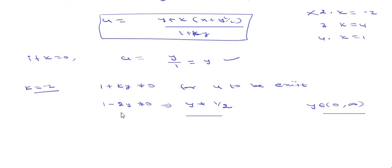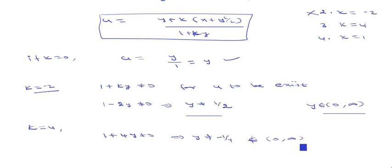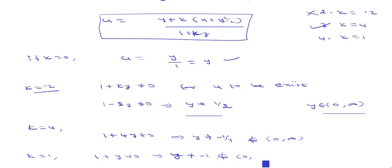For k = 4: we need 1 + 4y ≠ 0, which implies y ≠ −1/4. Since −1/4 does not belong to [0, ∞), the denominator is never zero in the domain, so the solution exists. For k = 1: we need 1 + y ≠ 0, implying y ≠ −1, which also does not belong to [0, ∞), so the solution exists.